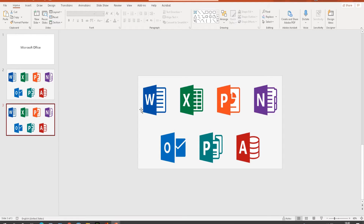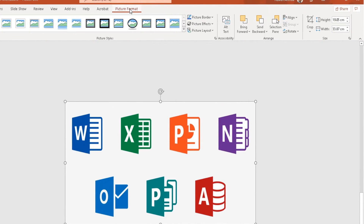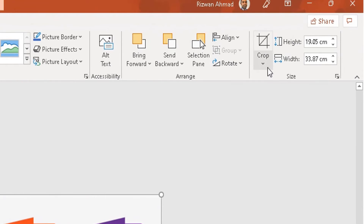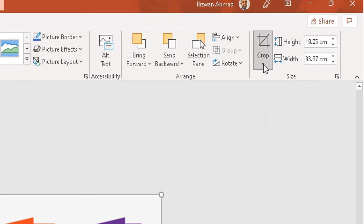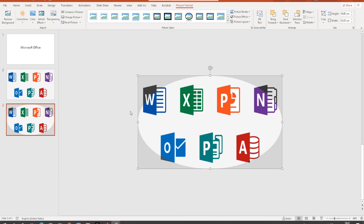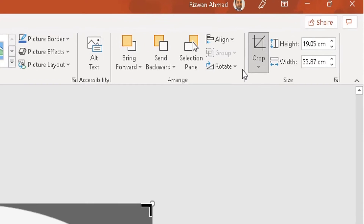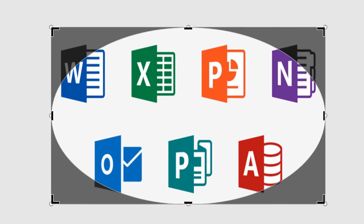I select the foreground image, go to Picture Format in the ribbon, scroll to the right and find the Crop tool. I click the down arrow on the Crop tool, go to Crop to Shape, and under Basic Shapes I choose the Oval shape. That shows me the crop shape. I then leave it selected, go back to the Crop tool, and click the Crop icon to enable the crop tool on that oval selection.